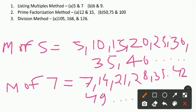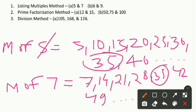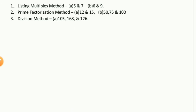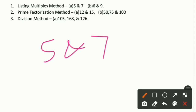Now we find the common multiples of 5 and 7. We can see that 35 is a common multiple — it appears in both lists. And it is the smallest one. So the LCM of 5 and 7 is 35. That was very easy!